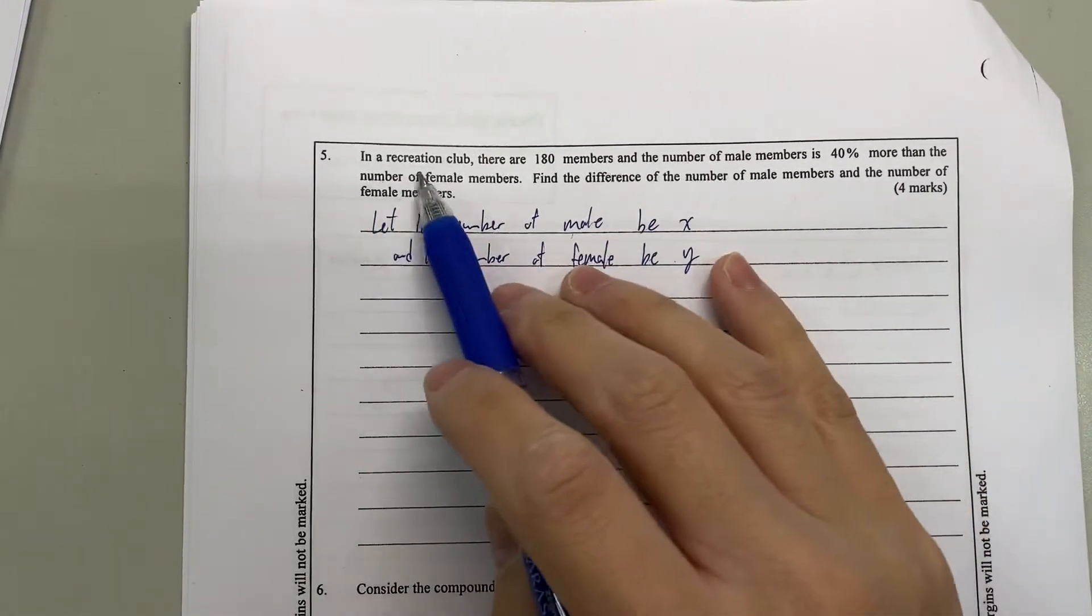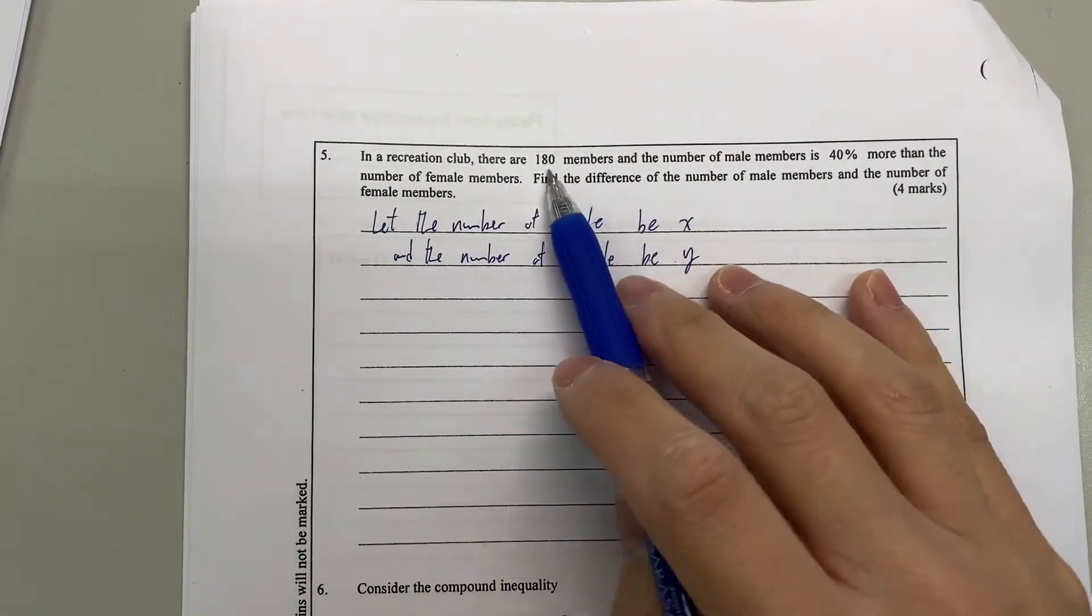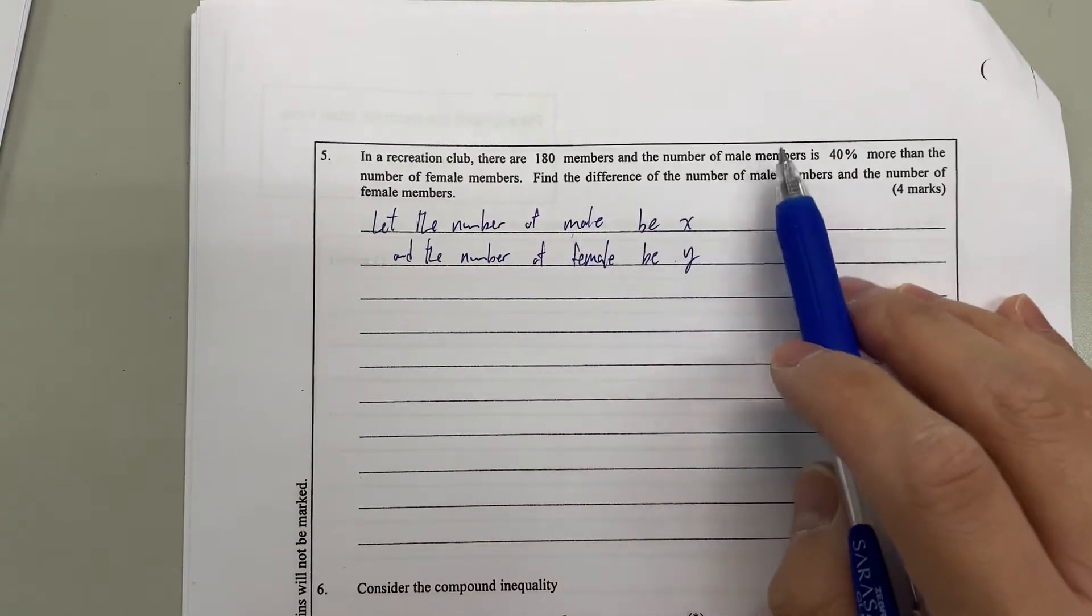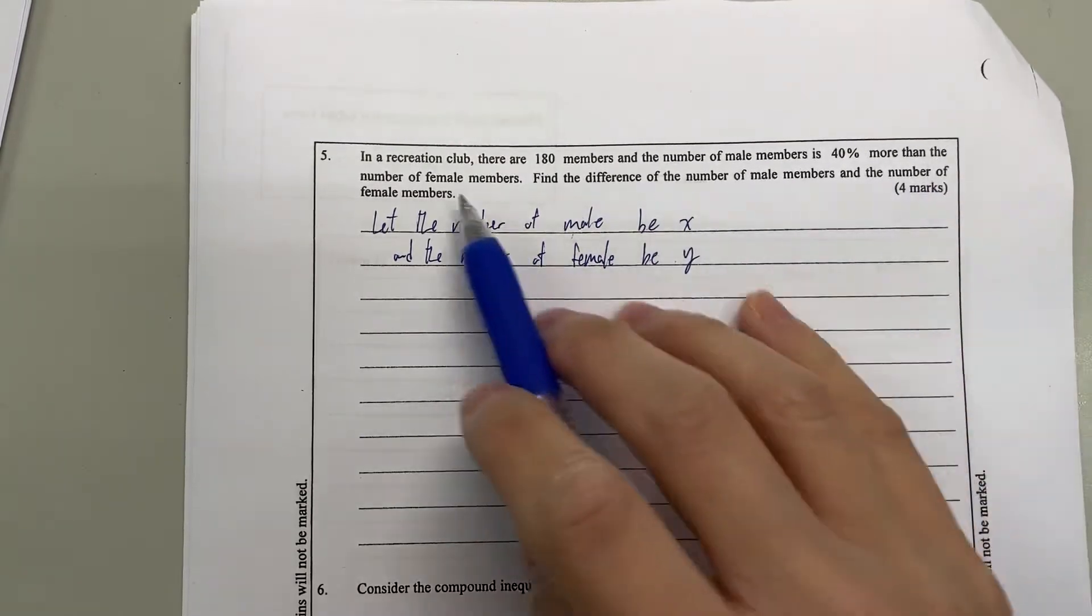Question 5. They say that in our recreation club there are 180 members and the number of male members is 40% more than the female members.